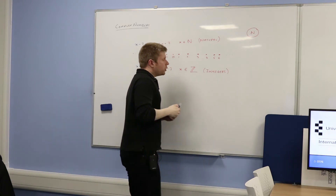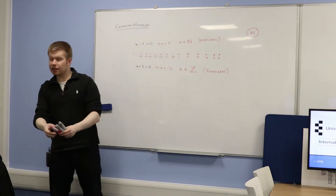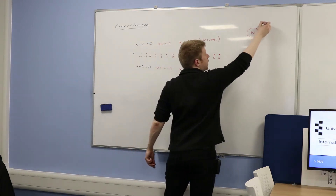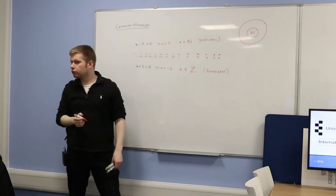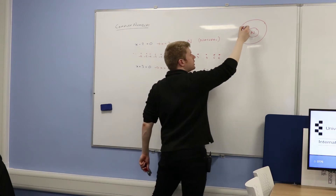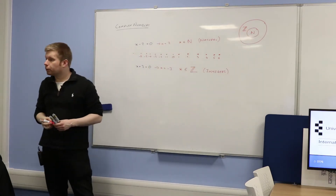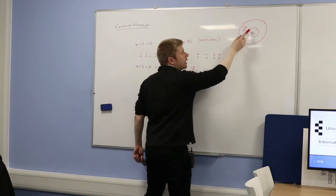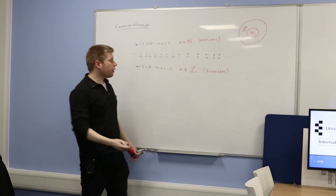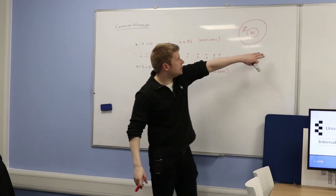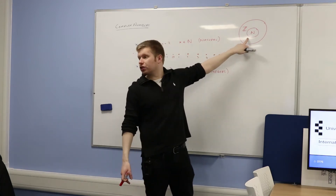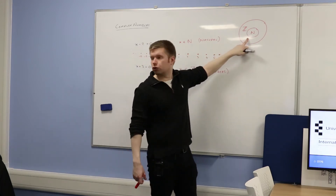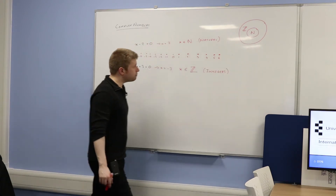So the integers include all of the negative ones as well — negative 2, negative 3, negative 4, negative 5, negative 6, etc., and everything in that direction too. You notice that 0 is now part of the integers. The set of integers also includes the set of natural numbers, because every single natural number is also an integer, but not every integer is a natural number.